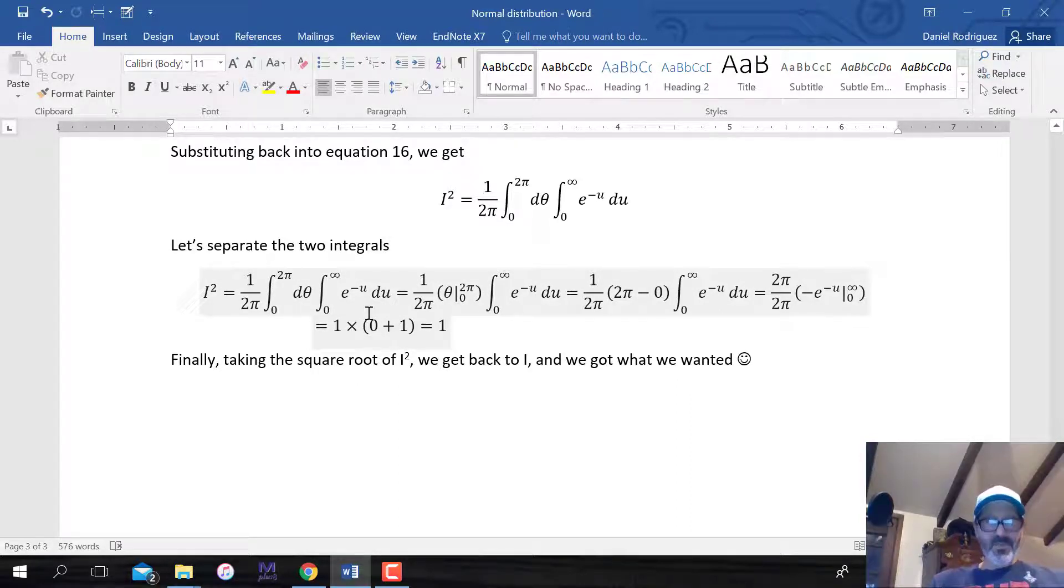We're going to be left with one over 2 pi times, this is the first integral. It's 2 pi minus zero. This theta is going to equal zero in the second part. So it's going to be basically one over 2 pi times 2 pi. You'll see that'll cancel out. The second part, we'll just conduct this integral here. Its antiderivative is minus e to the minus u, and we're solving for it from zero to infinity.